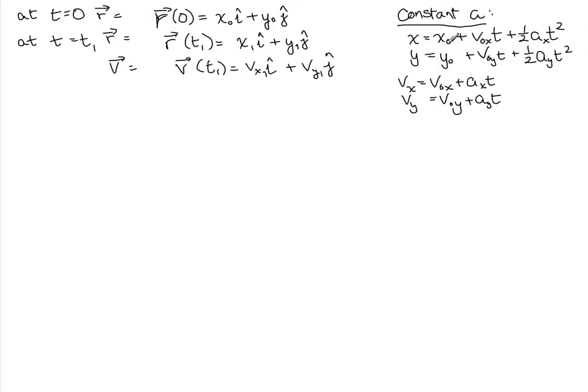Now here's x0 and y0, like you'd expect. Here, this is v0 in the x direction and v0 in the y direction. And this is the x acceleration and this is the y acceleration. And then these are the same equations from kinematics with the same variables for the velocity.